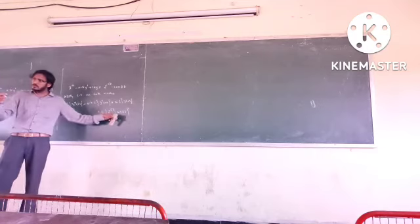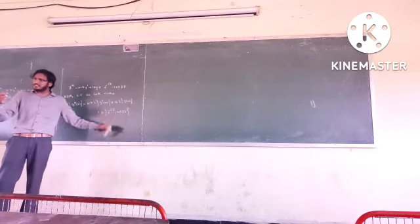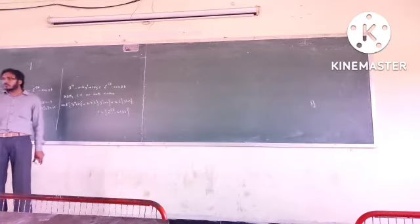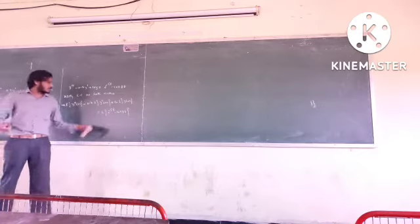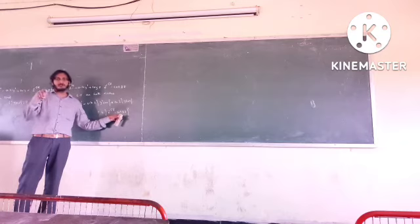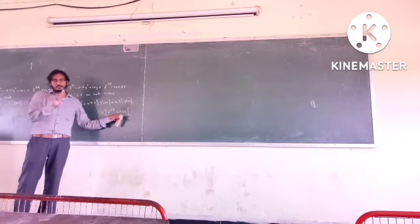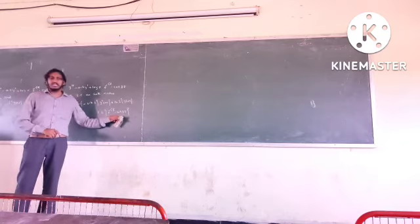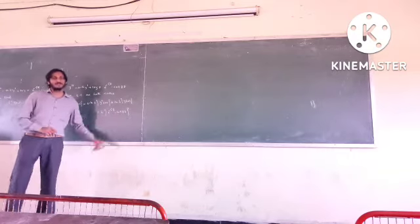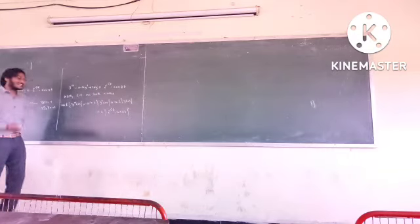Two approaches are possible. You can go for the u-v rule. Either you can use the u-v rule, or you can represent cos(ωt) in terms of the Euler series: e to the power iθ plus e to the power minus iθ divided by 2, giving e^(8i) plus e^(-8i) divided by 2.